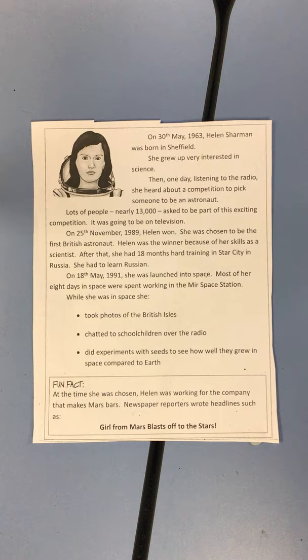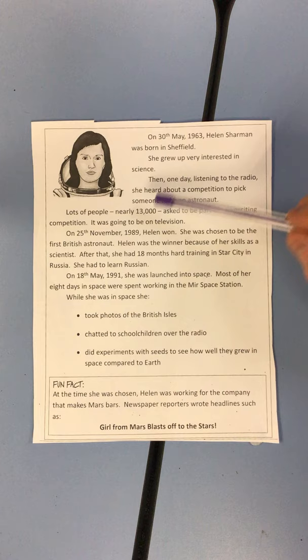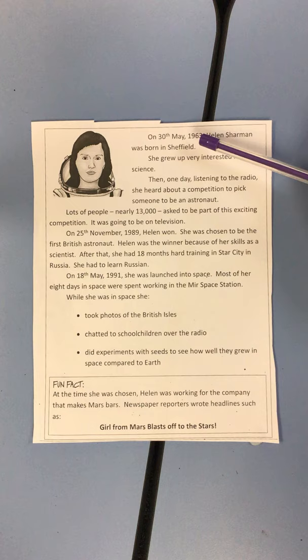Sam, when was Helen Sharman born? 30th of May 1963. Brilliant. So what Sam has done, he's seen that date there and he's taken it. If you have more than one date on your page, it's quite good to ask that question to your children, because if children are scanning for a date — if you notice on this page there are actually three dates — you want to make sure that your children are definitely focused on the bit when she was born, and not the other bits when she won or when she was launched into space.